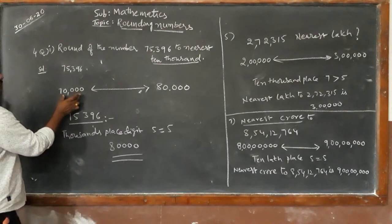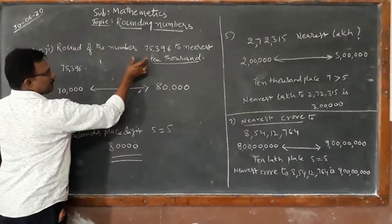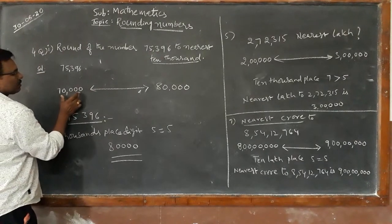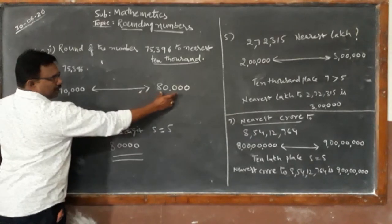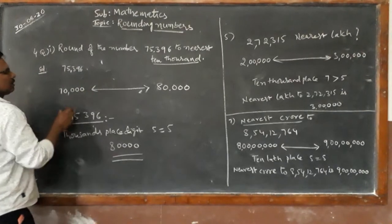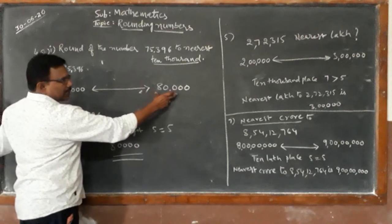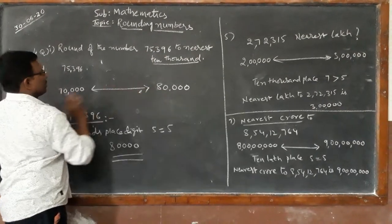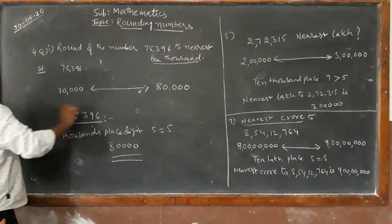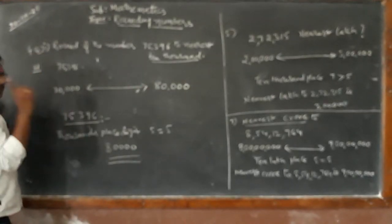The number 75,396 lies between seventy thousand and eighty thousand. So what are the ten thousands? Seventy thousand and eighty thousand. We need to decide whether this number is nearer to seventy thousand or nearer to eighty thousand, since it lies between these two numbers.